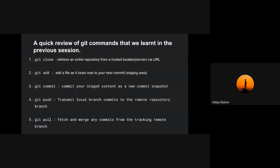Then git add — it adds a file to your next commit, specifically to the staging area. The staging area is a temporary place where files you make changes to are kept. Git add adds those files to the staging area to be committed. After git add comes git commit — the files in the staging area are committed and a new snapshot is taken of your git repository.